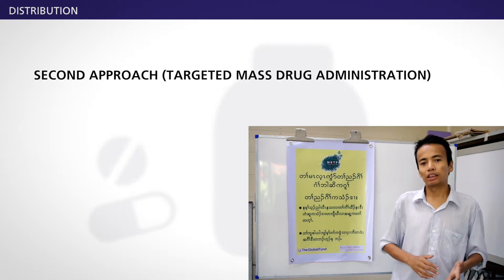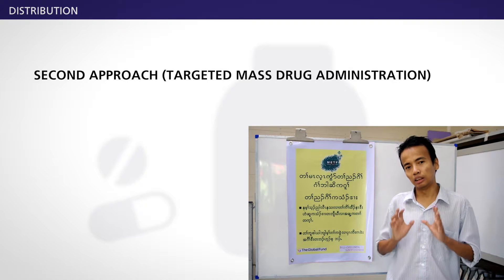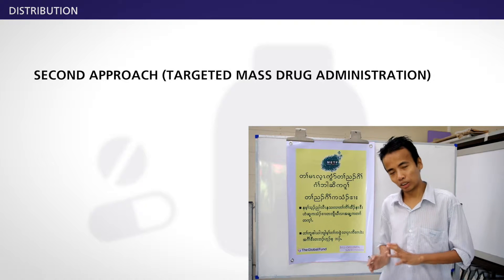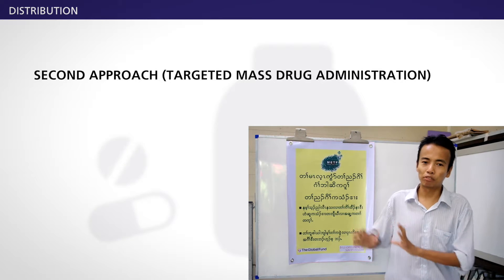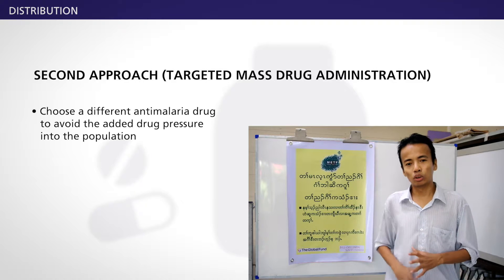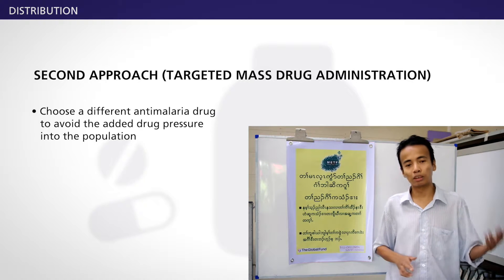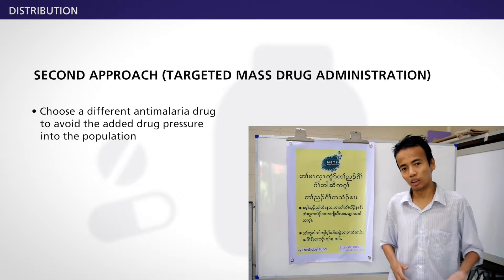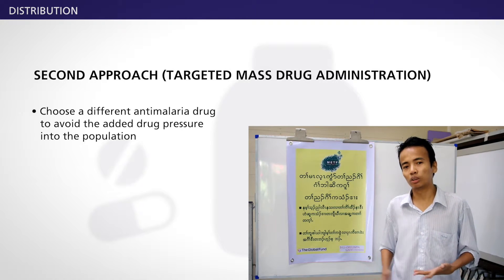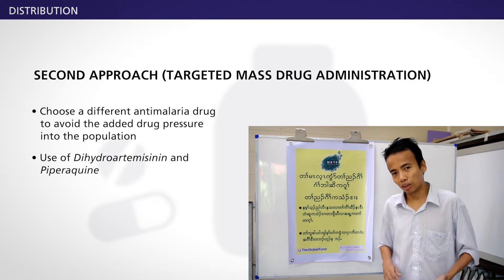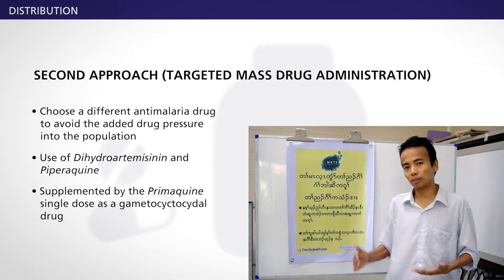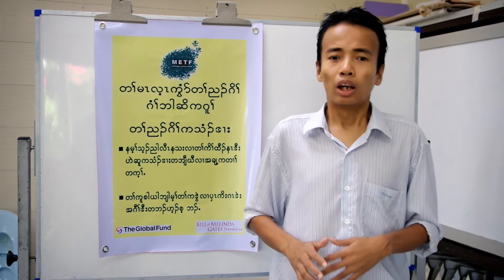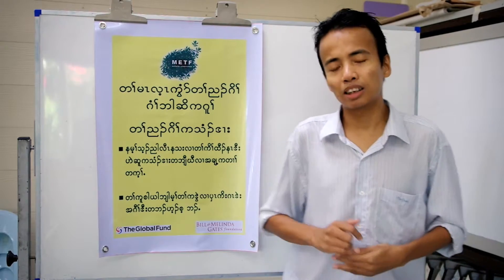Another part is the distribution of the anti-malaria drug for the targeted mass drug administration activity. In that activity, we try to choose a different anti-malaria drug rather than artemether-lumefantrine, just to avoid the added drug pressure into the population. So we choose dihydroartemisinin-piperaquine, together with primaquine single dose as a gametocytocidal drug.